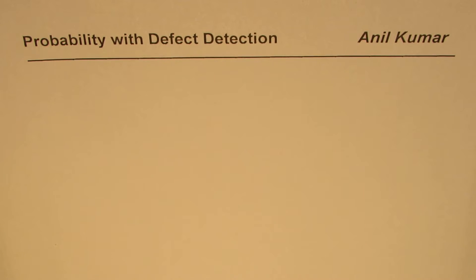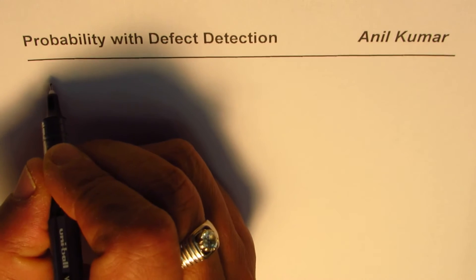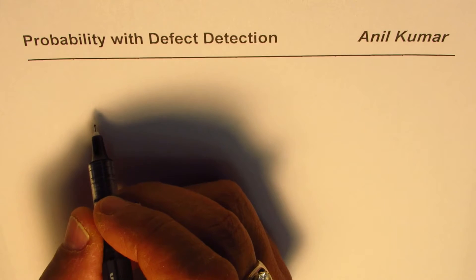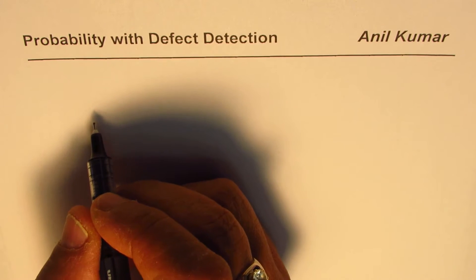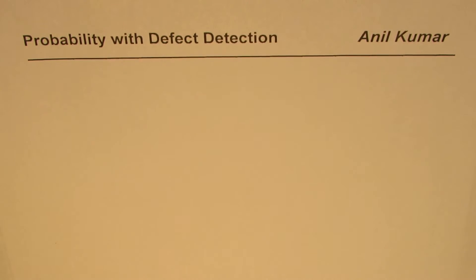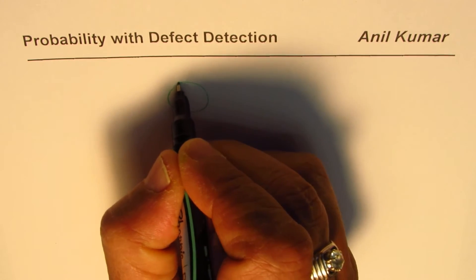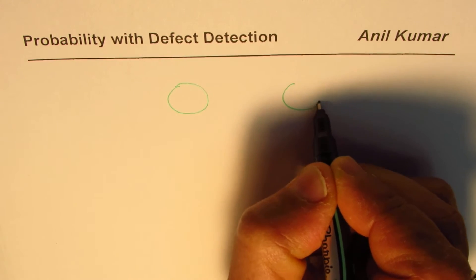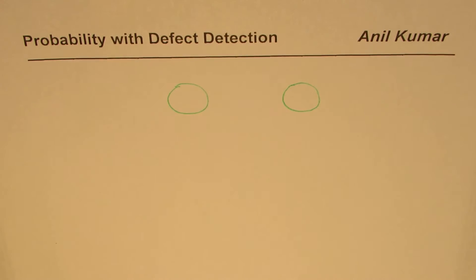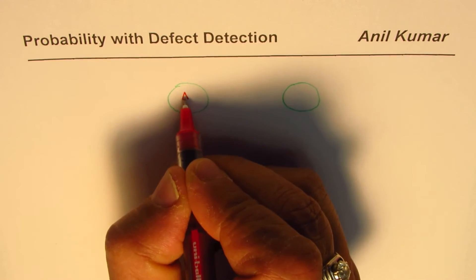I'm Anil Kumar and in this video we'll try to find from where the defect came using probability. Let's take the case of manufacturing. We have two machines which are manufacturing some items — let's call these machines machine A and machine B.